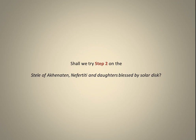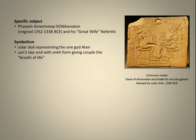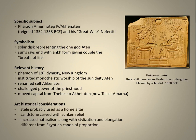Let's try Step 2 on the stele of Akhenaten, Nefertiti, and daughters blessed by solar disk. Specific subject: Pharaoh Amenhotep IV, Akhenaten, who reigned 1352 to 1338 BCE, and his great wife Nefertiti. Symbolism: the solar disk represents the one god, Aten; the sun's rays end with the ankh form, giving the couple the breath of life. Relevant history: Pharaoh of the 18th Dynasty, New Kingdom, he instituted monotheistic worship of the sun deity Aten, renamed himself Akhenaten, challenged the power of the priesthood, and moved the capital from Thebes to Akhetaten, now Tel el-Amarna. Art historical considerations: the stele was probably used as a home altar, carved in sandstone with sunken relief, and shows increased naturalism along with stylization and elongation different from the Egyptian canon of proportion.